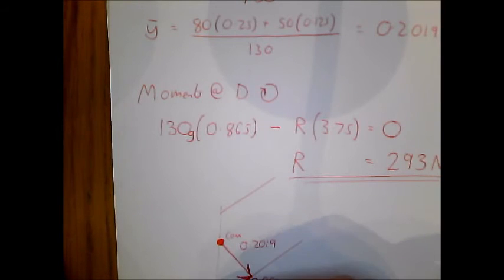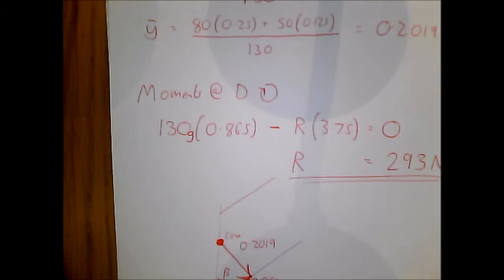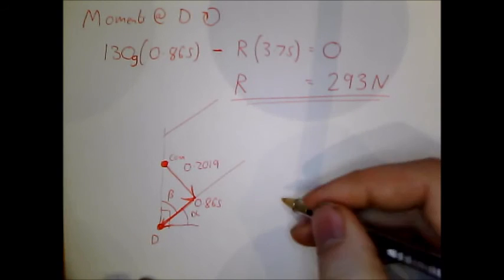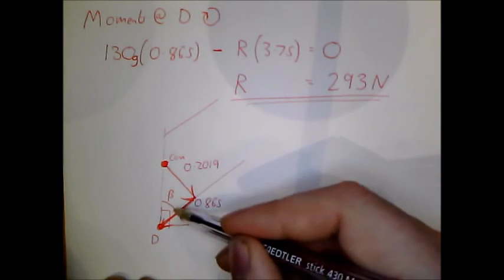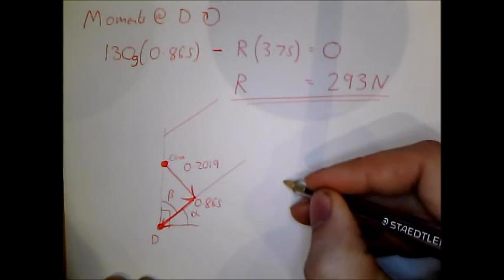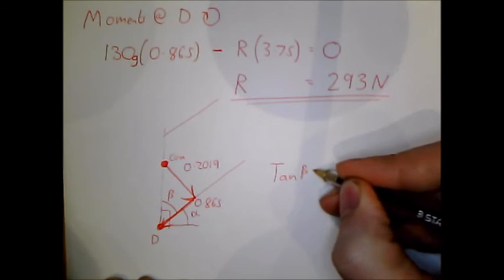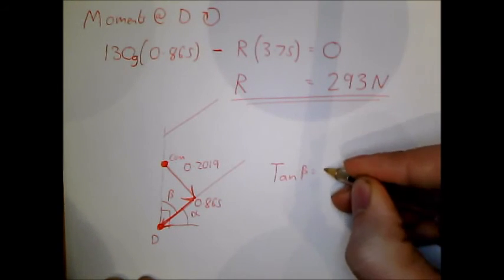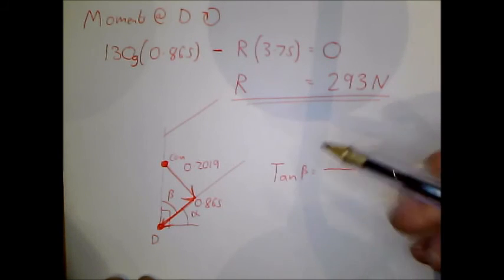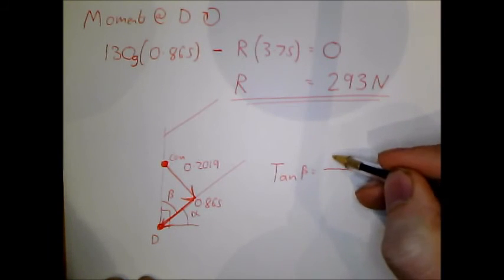So now we can get some angles. This is 90 degrees, so if we get this, beta, we can work out alpha. So we want to use tan. So tan beta is equal to the opposite over adjacent. So the opposite is 0.2019 and adjacent is 0.865.